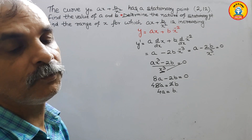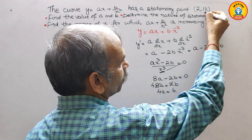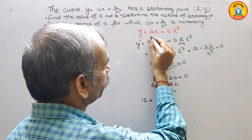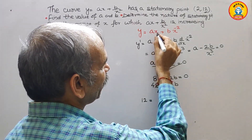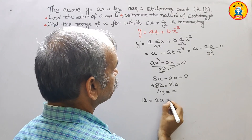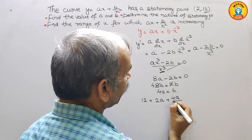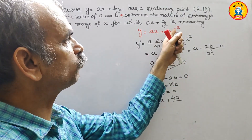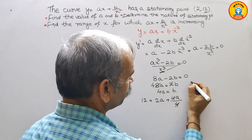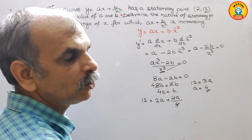Now we substitute using the point (2, 12). So y equals 12, which equals a times 2, giving 2a, plus b over x squared. Substituting b as 4a and x squared as 4, the 4s cancel. We get 12 equals 3a, therefore a equals 4.